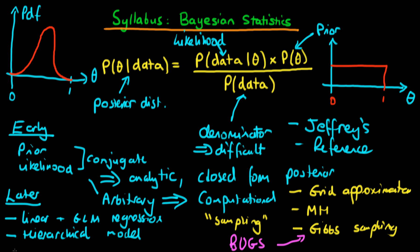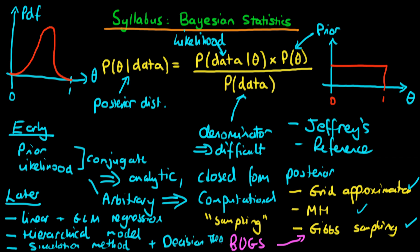Finally, we're going to talk about some relatively advanced concepts in Bayesian statistics, which will mainly be composed of simulation methods — methods which are potentially faster than the grid approximation, Metropolis-Hastings, and Gibbs sampling. We're also going to touch on Bayesian decision theory, which is essentially the theory as to how we should make an optimal decision under uncertainty when we can associate a cost with making the wrong decision.